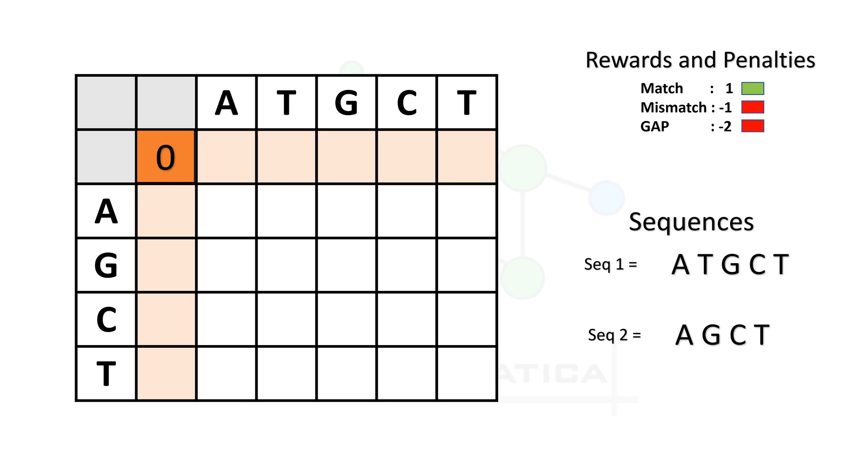When we move from 0 to A, we add a gap penalty to 0, so the value becomes minus 2. Moving from A to T, the value becomes minus 4, then minus 6, minus 8, minus 10, and so on. You get the point. Similarly, we will fill the first column, again starting from 0 and all the way up to T. Now our initialization step is completed, and we are ready for the matrix filling step.